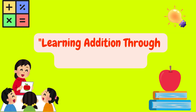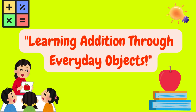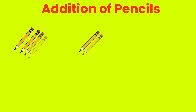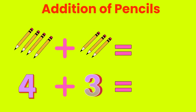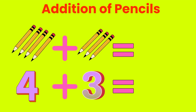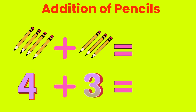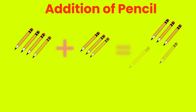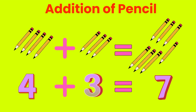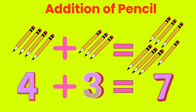Let's learn addition through everyday objects. Let's do addition of pencils. 4 pencils plus 3 pencils. Add 4 plus 3. Answer is... 4 pencils plus 3 pencils. Total is 7 pencils. 4 plus 3 is 7.